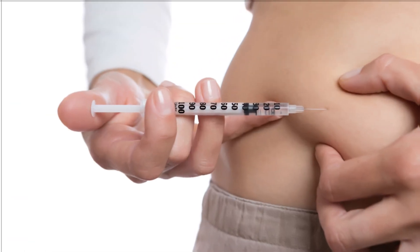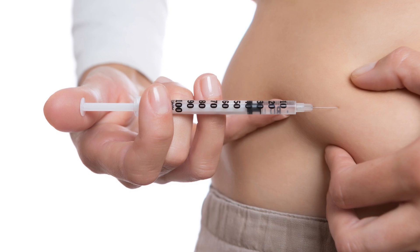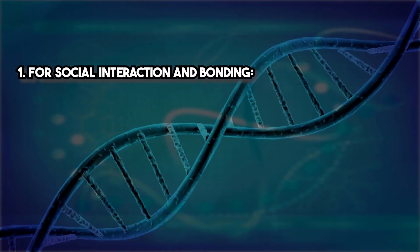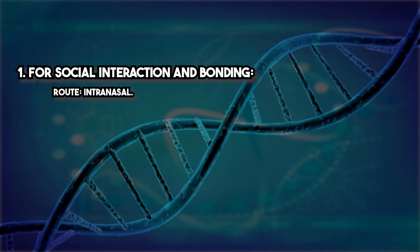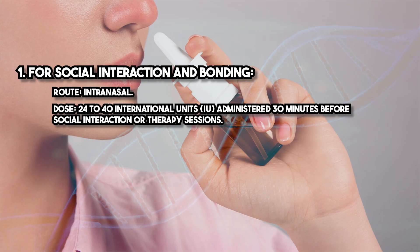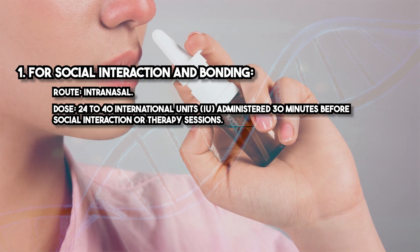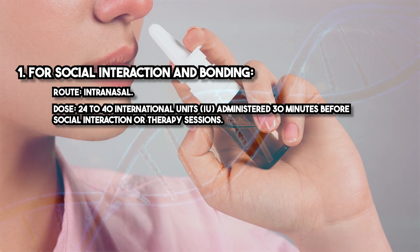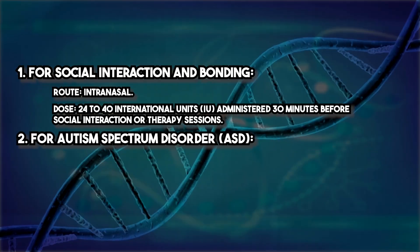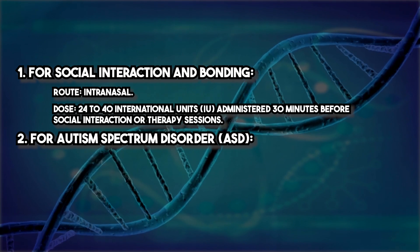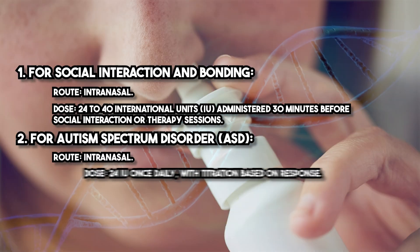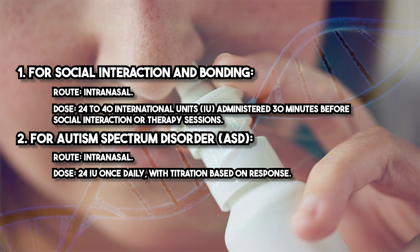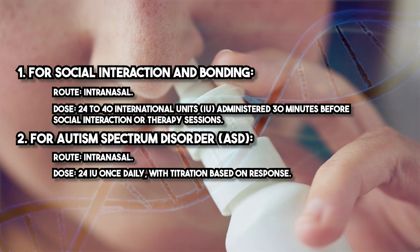Oxytocin can be administered via intranasal spray or subcutaneous injection, depending on the clinical application. For social interaction and bonding, the route is intranasal, with a dose of 24 to 40 international units (IU) administered 30 minutes before social interaction or therapy sessions. For autism spectrum disorder (ASD), the route is intranasal, with a dose of 24 IU once daily, with titration based on response.